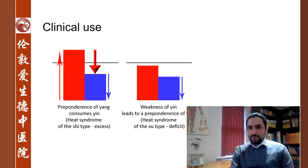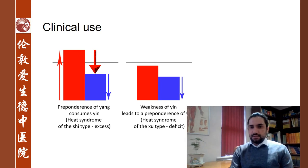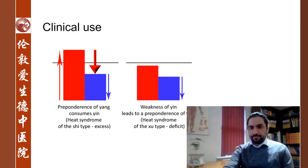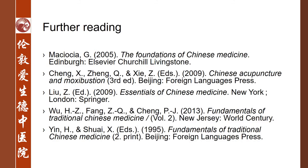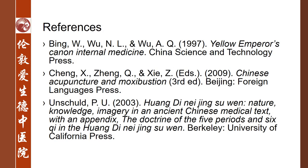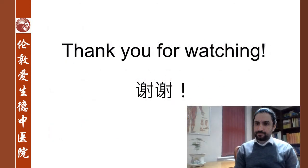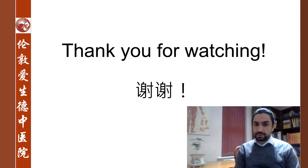A common example of this would be hot flushes in menopause, when there is a deficiency of yin and a relative excess of yang, which manifests as hot sensations for women who have reached menopause age. Join me soon for the second part of this presentation, where we are going to discuss qi, blood, and body fluids. Thank you very much for watching, and have a very good day.